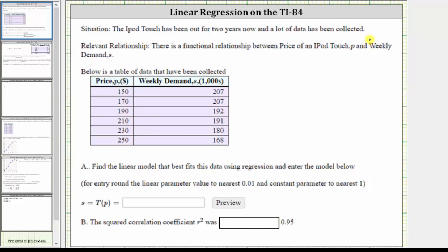In this problem, we are given information about the price P of an iPod and the weekly demand S in thousands. There is a functional relationship between the price of the iPod P and the weekly demand S.